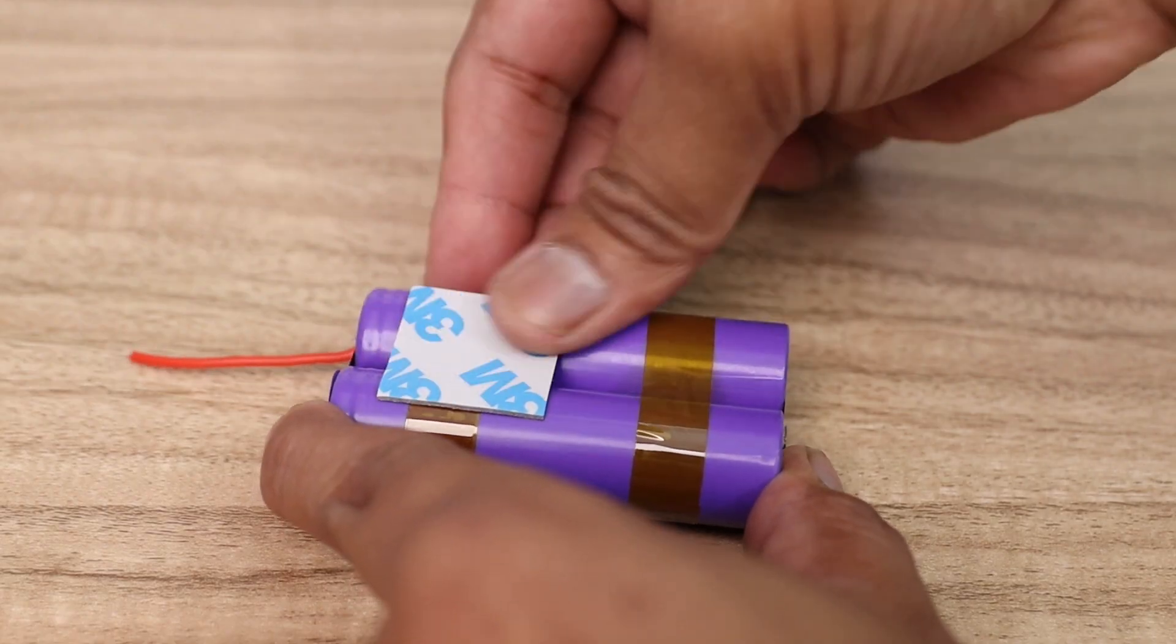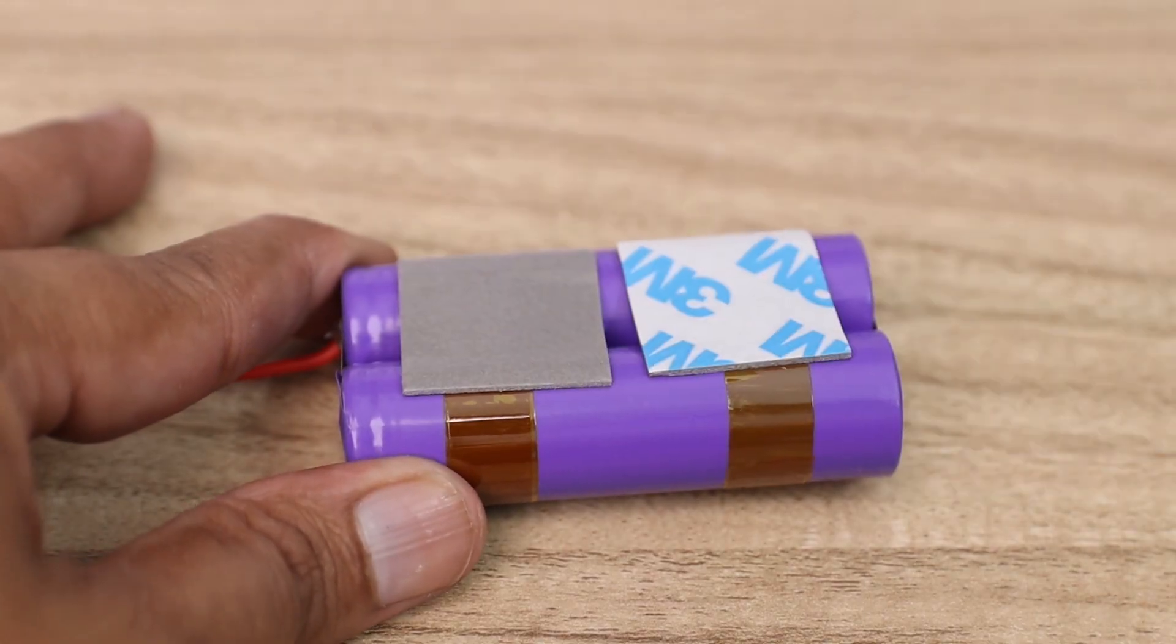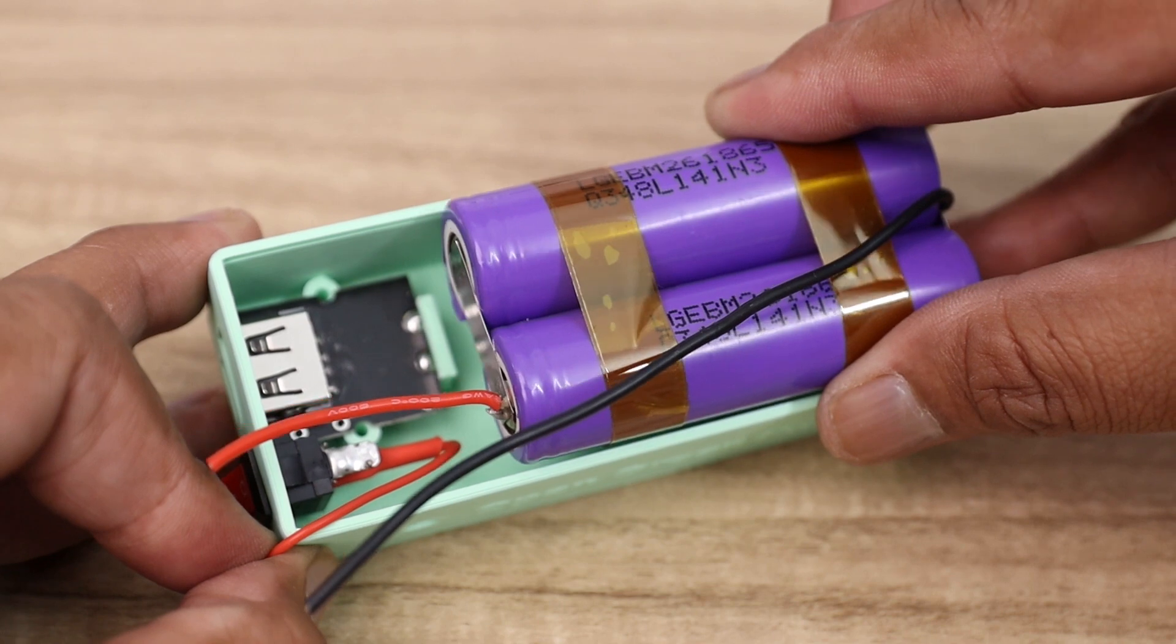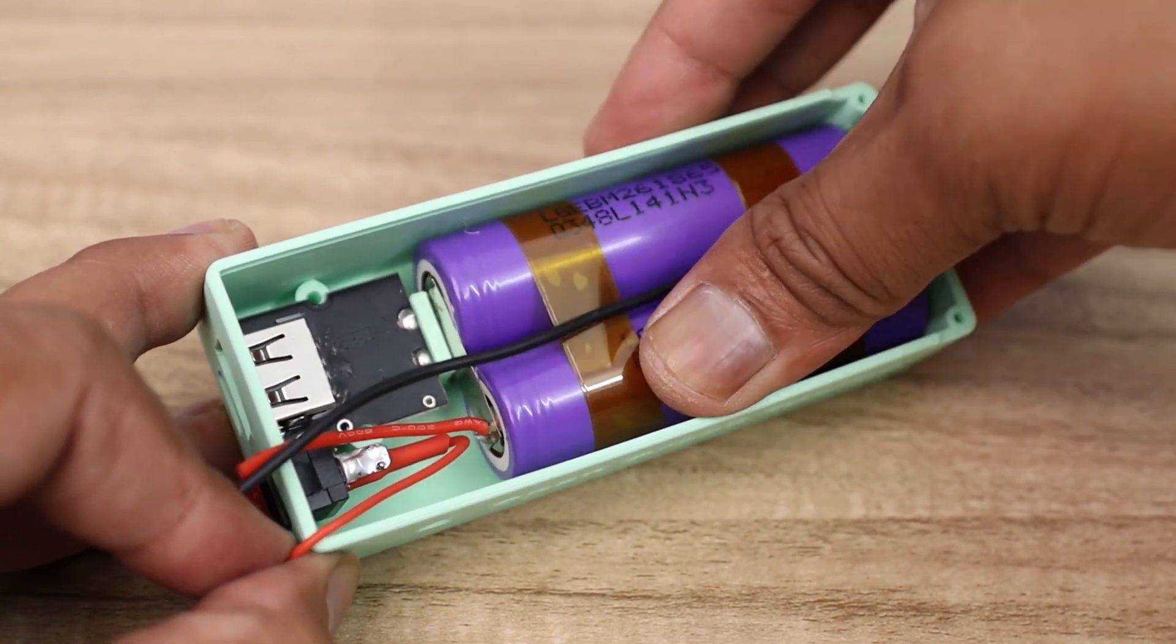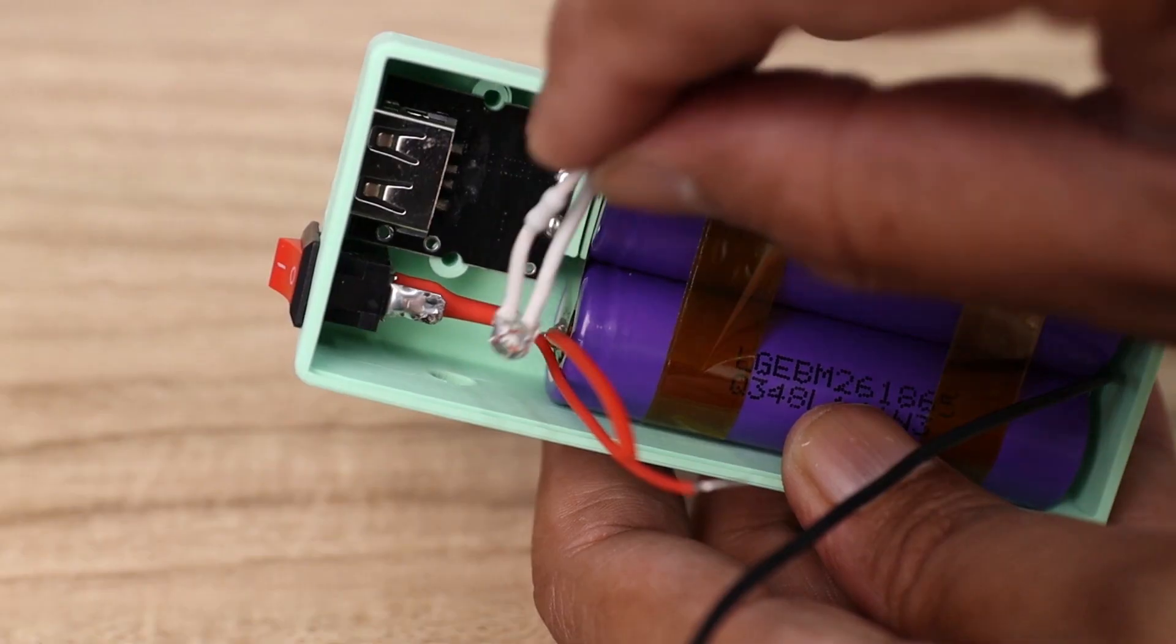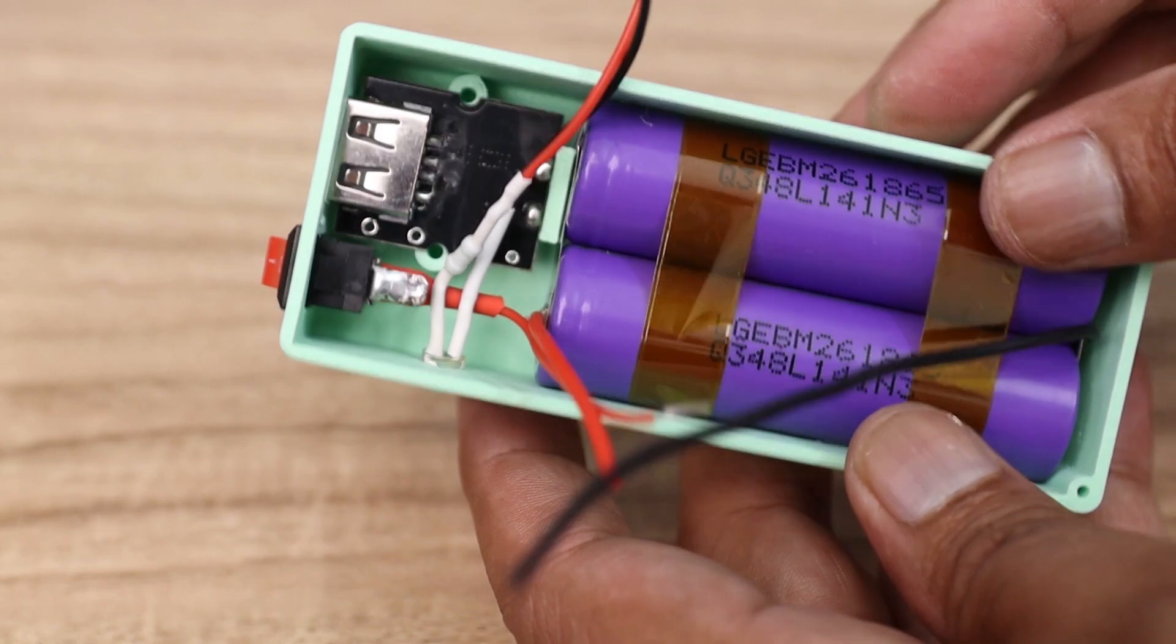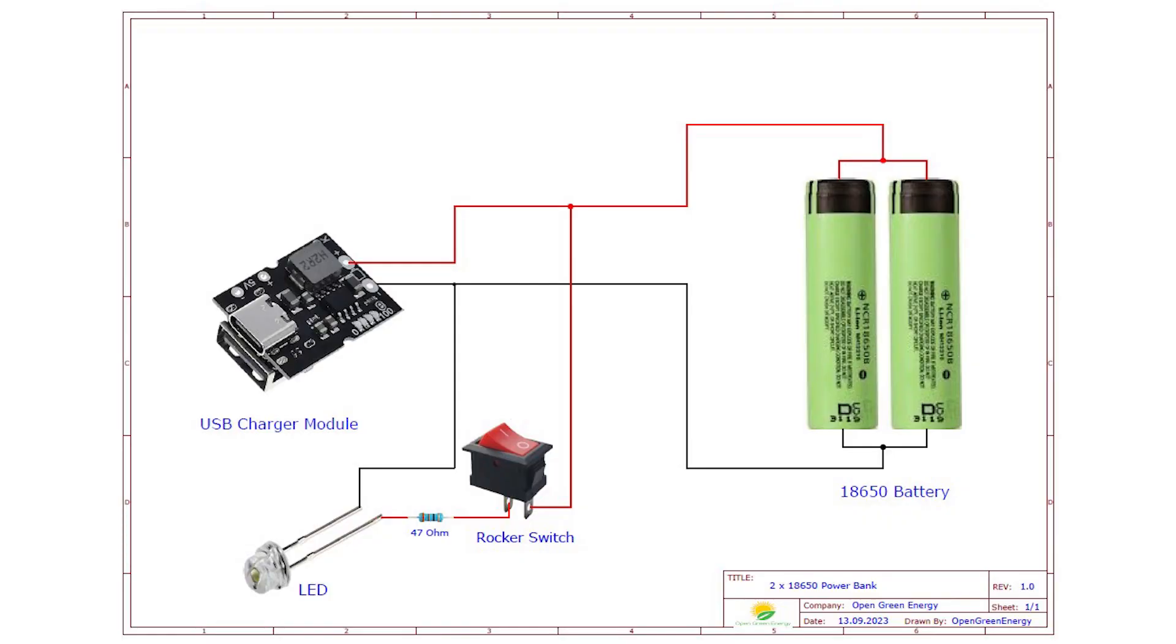I have installed the battery pack by using double sided mounting pads. Then make the electrical connection as per the schematic diagram. You can download the schematic diagram from Thingiverse. The link is given in the video description.